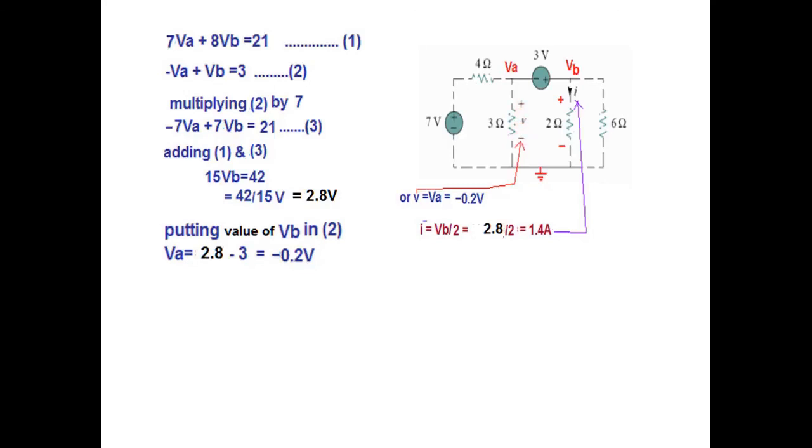We have taken VA as the voltage at this point. It is the same voltage across this. So VA and V are same. Therefore we can write that V is equal to VA is equal to 0.2V which we got here. So this is the first answer.